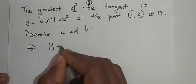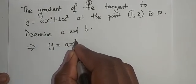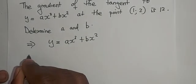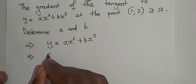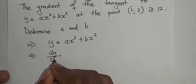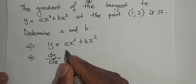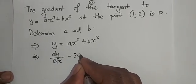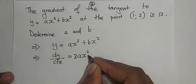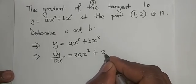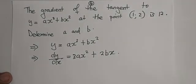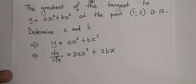So we are given y equals ax cubed plus bx squared, which in this case means that our dy/dx is equal to, differentiating this one, it becomes 3ax squared plus 2bx. That is the derivative.